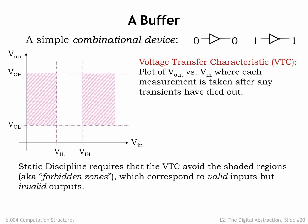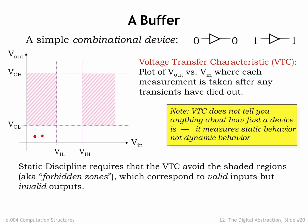OK, back to our buffer. Setting the input voltage to a value less than the low input threshold, V sub IL, produces an output voltage less than V sub OL, as expected. A digital zero input yields a digital zero output. Trying a slightly higher but still valid zero input gives a similar result. Note that these measurements don't tell us anything about the speed of the buffer; they are just measuring the static behavior of the device, not its dynamic behavior.